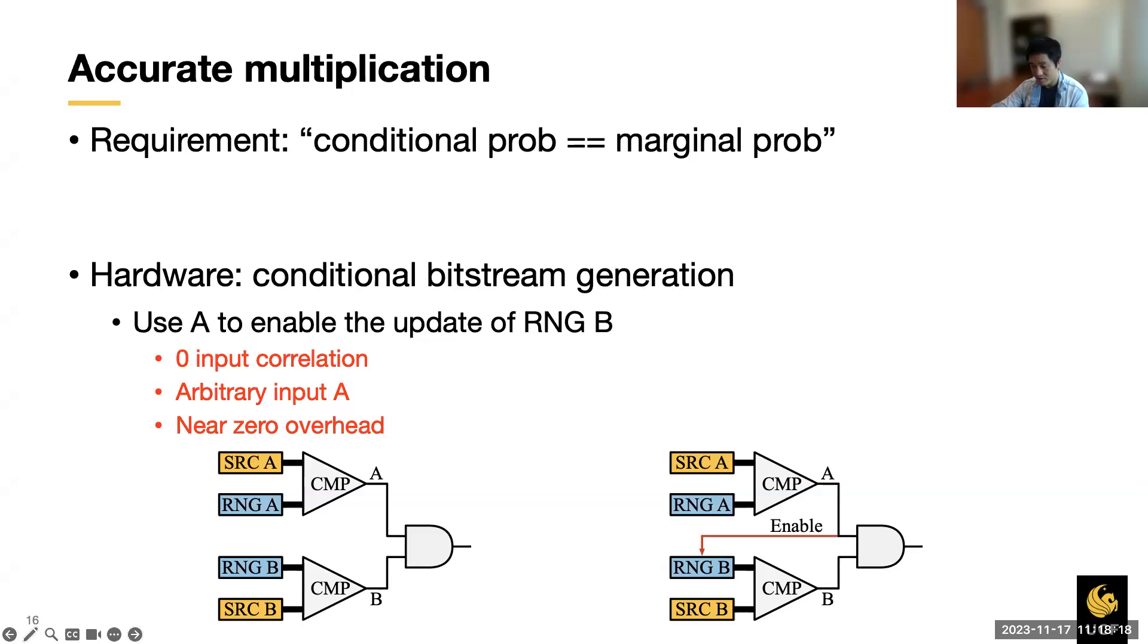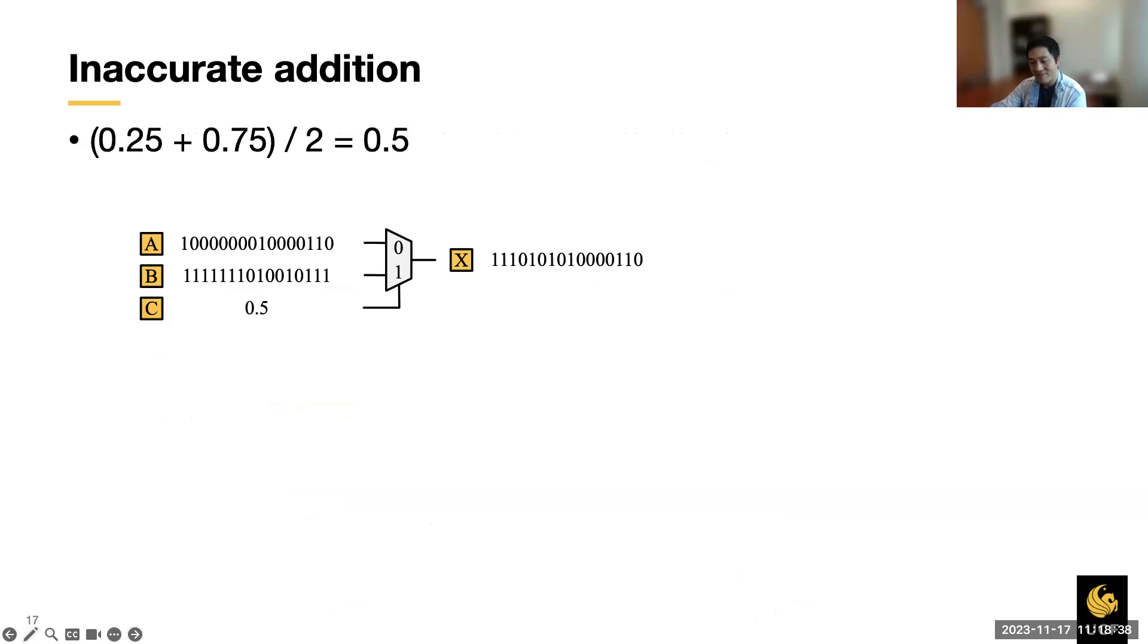On the left is the conventional multiplier with bitstream generation logic shown for both inputs. On the right is our proposed multiplier. The magic here is that now we just use A to enable the update of the random number generator for B, indicated by the red line, and we call it conditional bitstream generation. This circuit guarantees zero correlation for arbitrary input A. To this end, the inaccuracy problem for unary multiplication which has been there for half a century can be solved with nearly zero overhead. This is my solution and there are other solutions available. One of the work is the convolution-based theory from Dr. Najafi, and I like that very much.